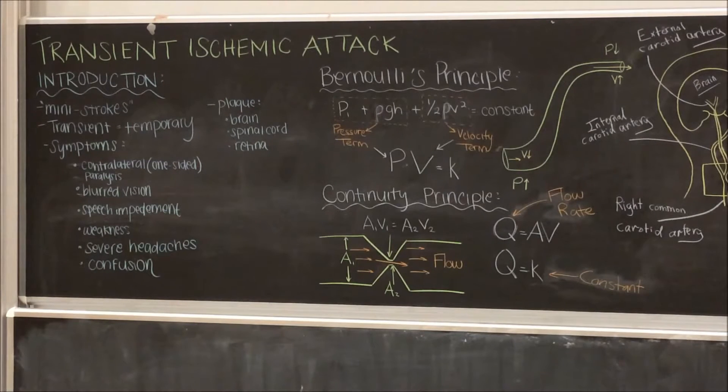As an introduction, transient ischemic attacks are temporary blockages of the arteries due to plaque that lead to brief loss of blood, ischemia, to regions such as the brain, spinal cord and retina. These are commonly known as mini strokes.